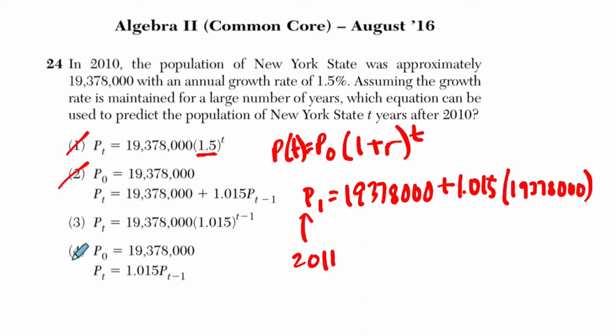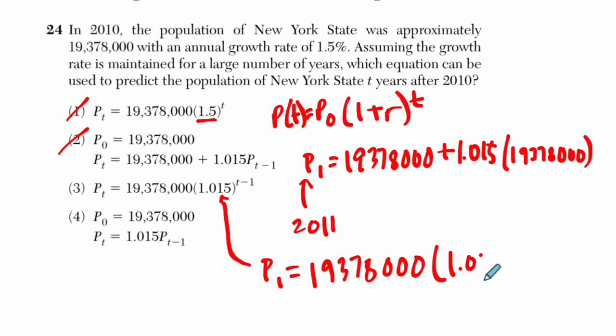Then it comes down to these last two choices. In this one, I think I chose this answer at first, but then when you test it, you can see it's incorrect. Again, if I plug in P sub 1, I would get 19,378,000 times 1.015 to the 1 minus 1 or 0 power. We're plugging in T here. So one year after 2010, the population should go up. But 1.015 to the 0 is just 1, and you would be stuck at 19,378,000. So that would be saying one year after 2010 there was no population growth, which is not what we're given here. So the answer has to be choice 4.